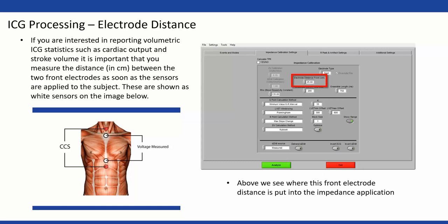One more thing on calibration settings: if you're looking to report on volumetric measures like stroke volume and cardiac output, it's very important that during acquisition the experimenter measures the distance between the two white front sensors. We need to know the thorax size to estimate blood volume. Make sure you're recording that distance and entering it into the impedance calibration settings. If you're using band electrodes rather than spot electrodes, you'll also need to take the back distance — there are two measurements needed. But for most people we're using spot, so just that front distance.